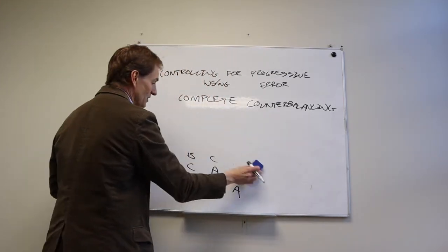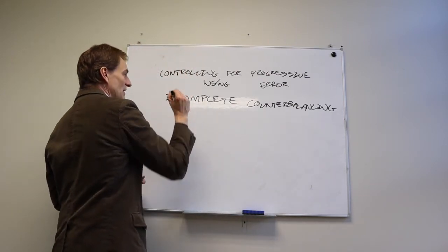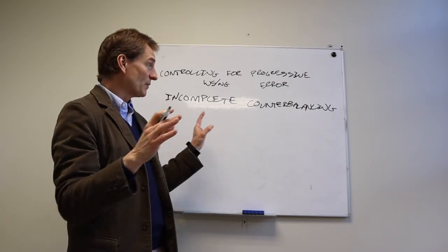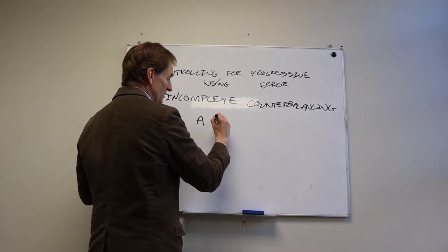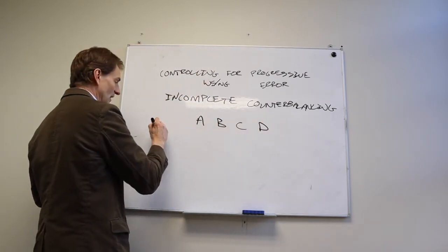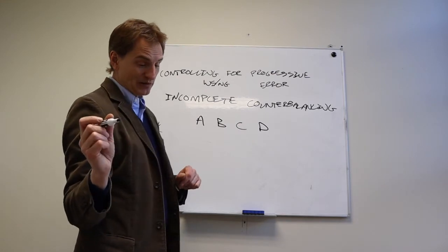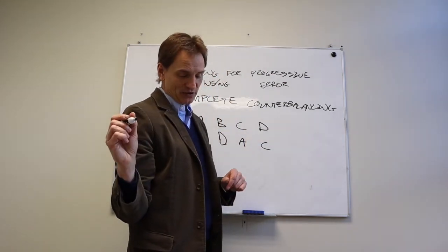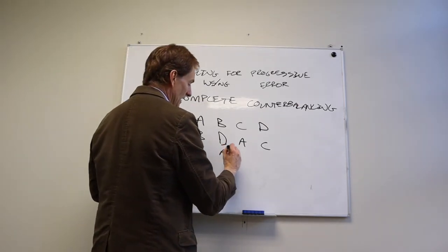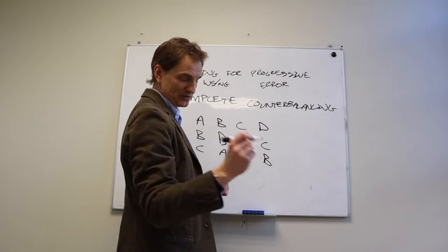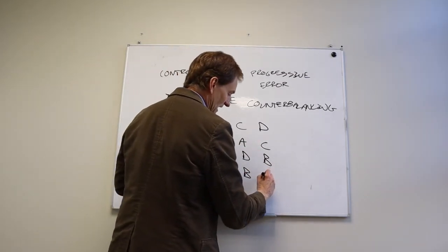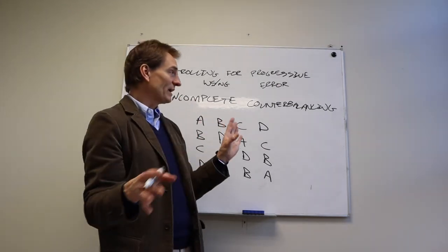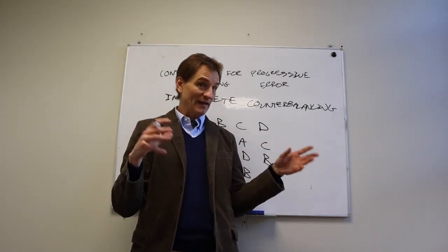And that something else is what's called incomplete counterbalancing. And we use this when we have four or more different treatment conditions. And so the way this is set up is the first person gets A, B, C, and D. Then the second person who comes through gets B, D, A, C. And then the next person who comes through gets C, A, D, B. And the next person who comes through gets D, C, B, A. And then it goes back to this one again. So the fifth, sixth, seventh, eighth, ninth, tenth.